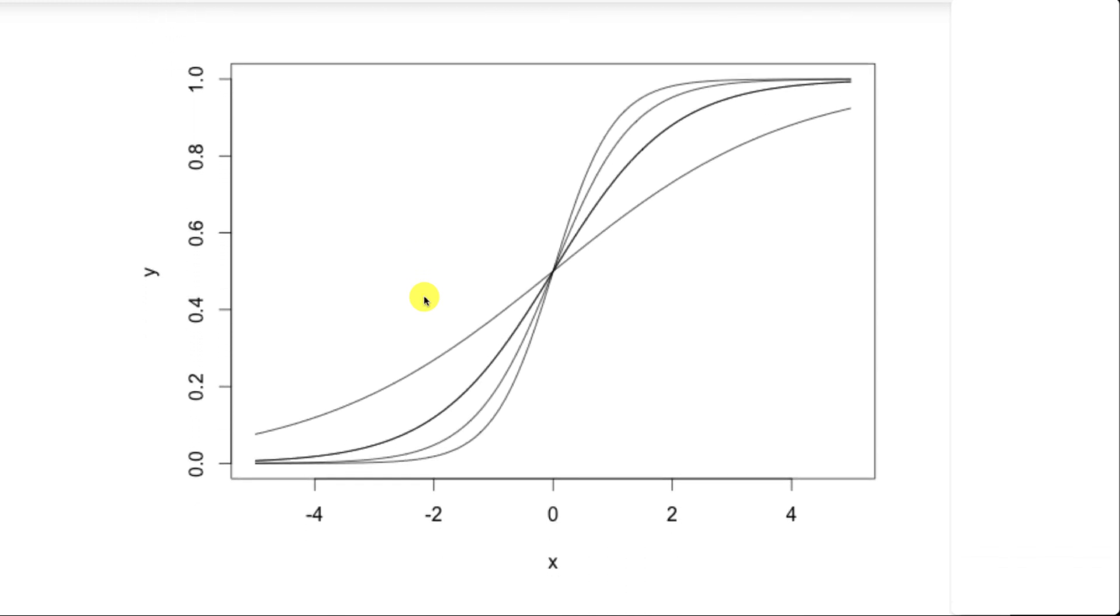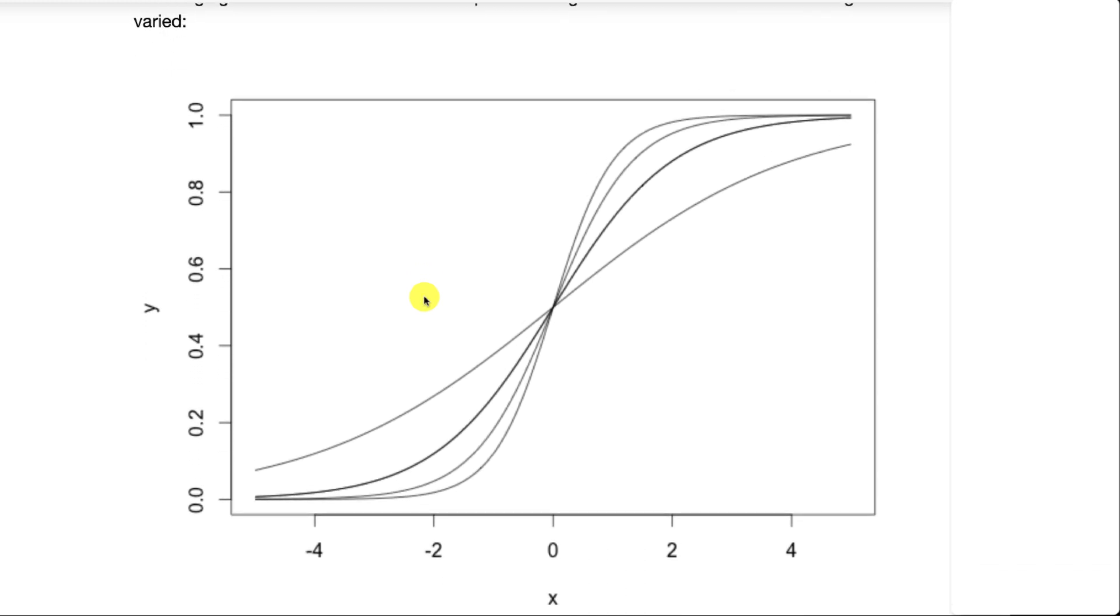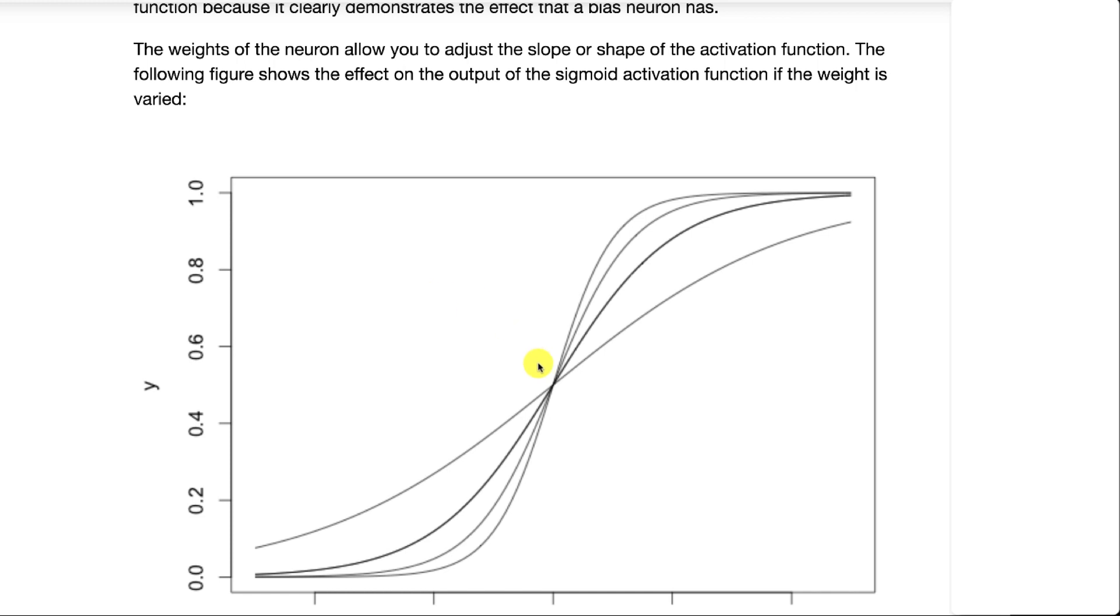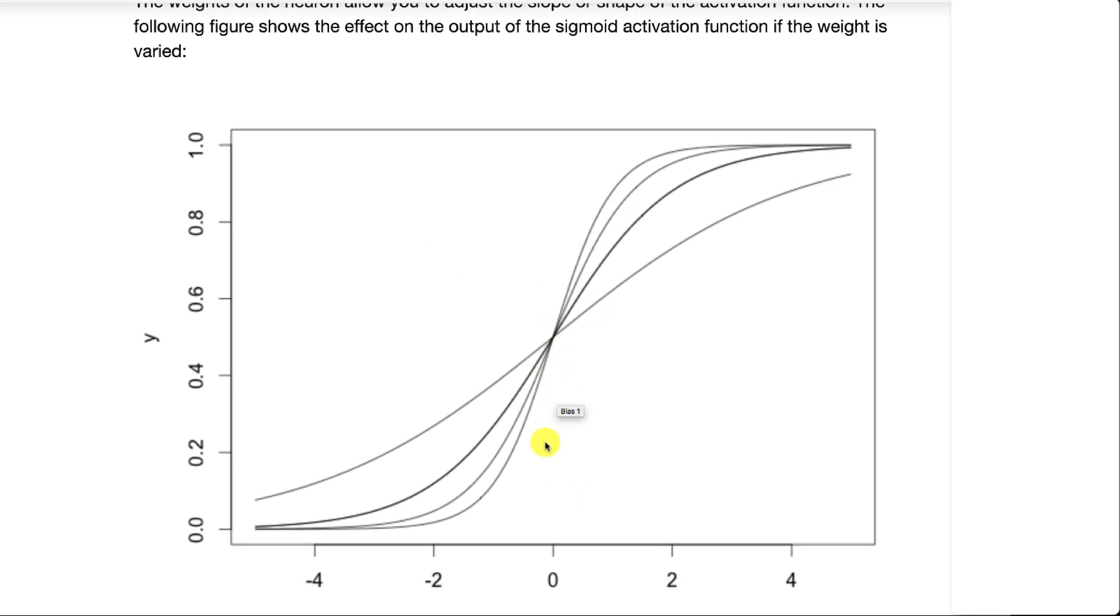If you look at this one, this is an example of when we change the weight. If you notice, we change the weight, it's effectively changing the slope.